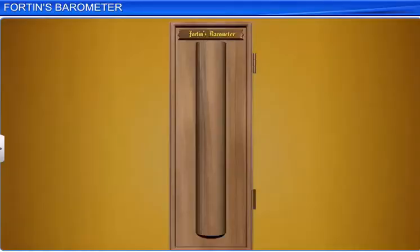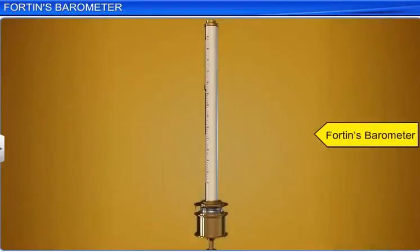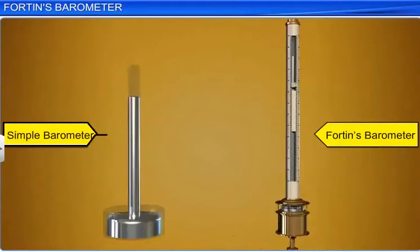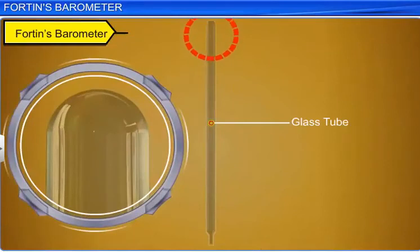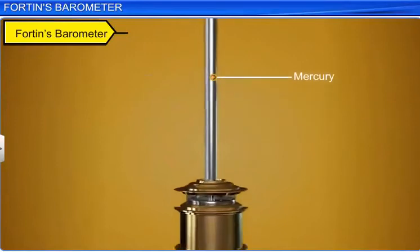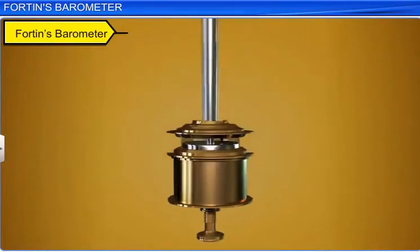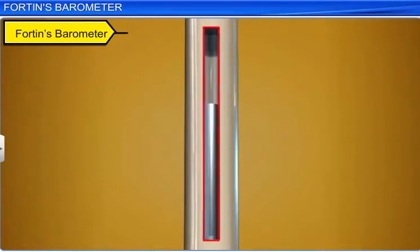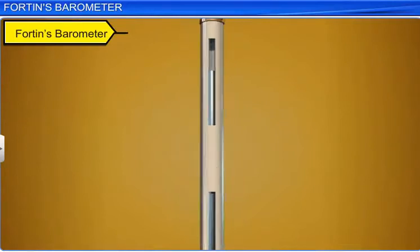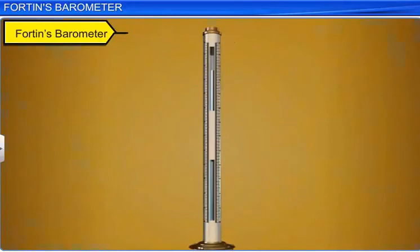A barometer is an instrument used to measure atmospheric pressure. Fortin's barometer is a modified form of Torricelli's simple barometer. It consists of a narrow glass tube of length about 90 cm, closed at one end, completely filled with mercury and kept inverted in a cistern filled with dry mercury. The glass tube is protected by enclosing it in a brass tube. The upper part of the brass tube has a slit that enables the level of mercury in the glass tube to be seen. A scale graduated in millimeters is attached to the brass tube and functions as the main scale.